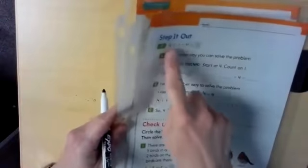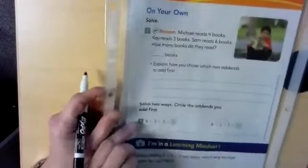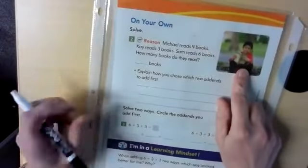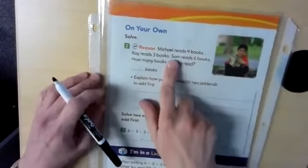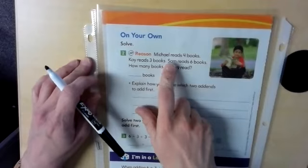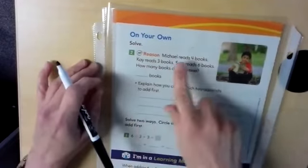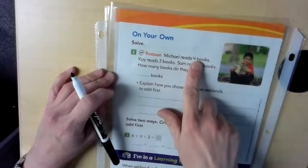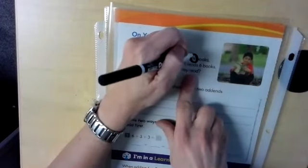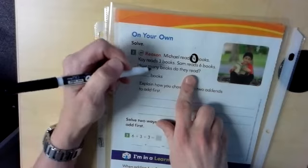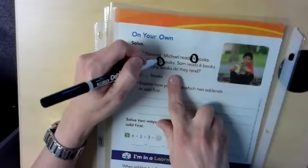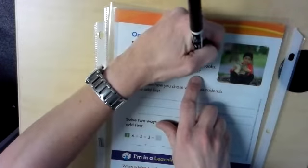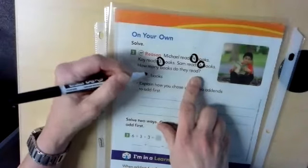Okay, boys and girls, so we're going to go ahead and flip past now. We're going to flip past, step it out. You can practice those at home if you would like. Then we're going to flip to our very back page where we see the little boy doing one of my favorite things, reading. And it's On Your Own. This will be your On Your Own section on the computer as well. So number two. Michael reads four books. Kay reads three books. Sam reads six books. How many books do they read?